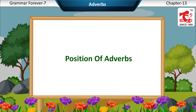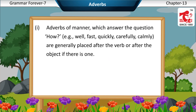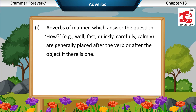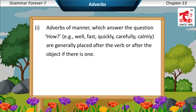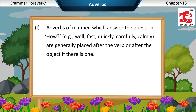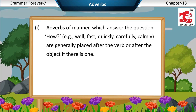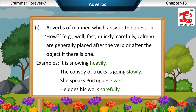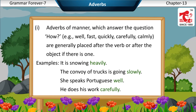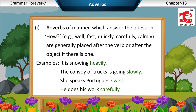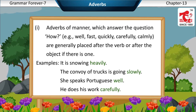Position of adverbs. First, adverbs of manner, which answer the question 'how' — examples: well, fast, quickly, carefully, calmly — are generally placed after the verb, or after the object if there is one. Examples: It is snowing heavily. The convoy of trucks is going slowly. She speaks Portuguese well. He does his work carefully.